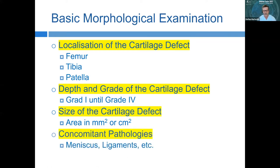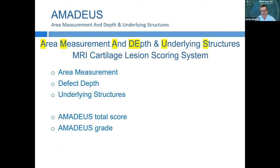One score used before treating the patient is the AMADEUS score — Area Measurement And Depth and Underlying Structures — an MRI cartilage lesion scoring system with three different kinds of measurements: the area, the defect depth, and the underlying structures. Together these give us the AMADEUS total score and AMADEUS grade.